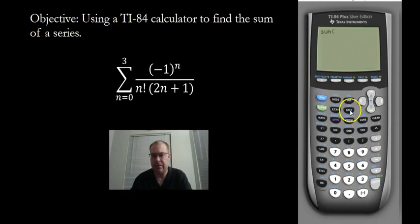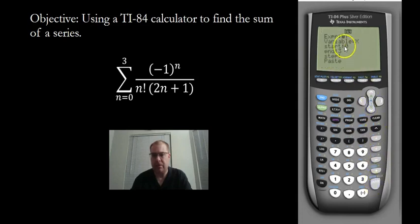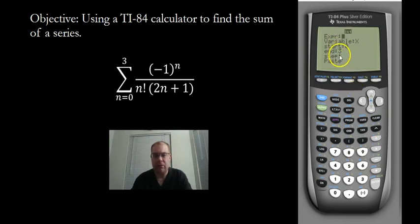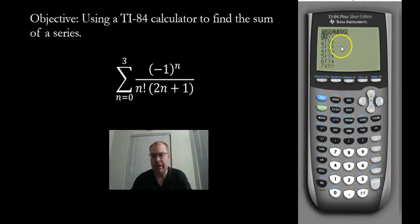Then go back into Second STAT and go to Operations, scroll down until you get to Sequence — that's option 5. The expression here — normally this would be empty unless you used it before. Remember, we stored the expression into Y1. To recall that, go under VARS, then Y-Variables, enter Function, and these are all the variables. We put the nth term into Y1, so you want to use Y1.